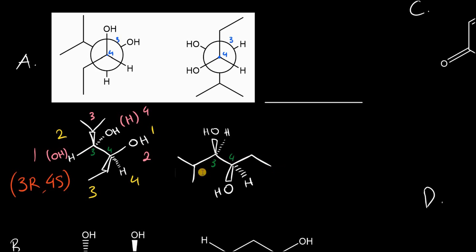We now have the longest carbon chain in the plane and just need to assign stereochemistry. The hydrogen is on a dash at both carbons, so reading stereochemistry should be straightforward. The OH takes first priority and hydrogen takes last. This hydrocarbon is inferior in priority to the adjacent group because we have a CH2 versus a CH bound to an oxygen. Drawing the arrow from 1 to 2 to 3 gives a clockwise motion, so at carbon 4 we have R.